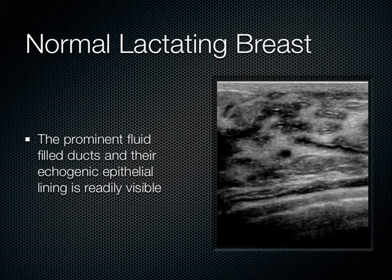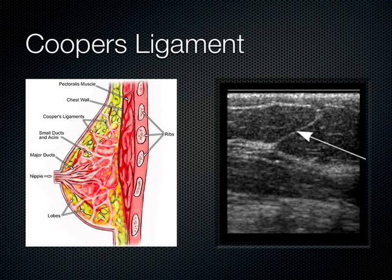In the normal lactating breast, fluid-filled ducts become much more prominent because they're filled with milk. In some of these you can see the epithelial layer very prominently within the ducts. You can also see the suspensory ligaments known as Cooper's ligaments quite easily — they look like hyperechoic lines. When imaged at the right angle, you can see that very obvious hyperechoic line which is Cooper's ligament, seen throughout breast tissue quite commonly.